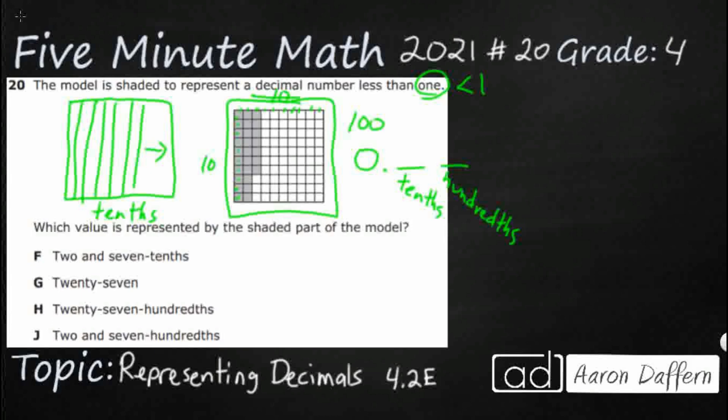So let's take a look at our values because they actually put them all in word form. So that's kind of the trick of this problem. So two and—let's just circle that right there. When we see the word and, that means we are going to use a decimal. So and is our decimal right there.